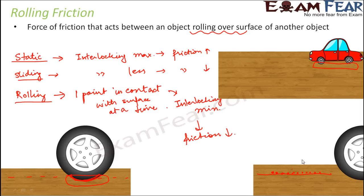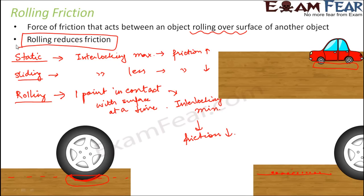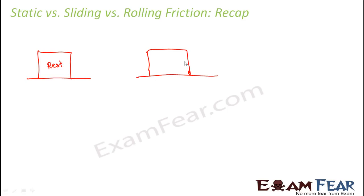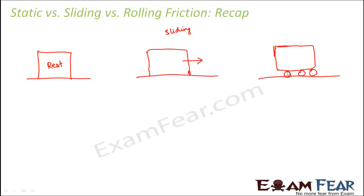Let me give a quick example to show how rolling helps reduce friction. Suppose you have a big box. In the first scenario, the box is at rest. In the second scenario, the same box is sliding. In the third scenario, you have the same big box but now wheels are attached to it, so the box is rolling.